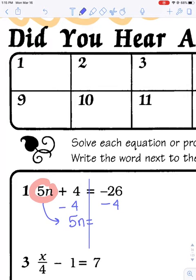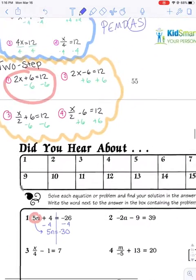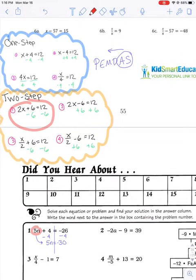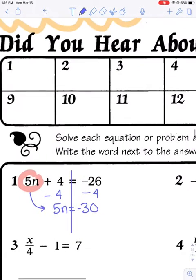The plus 4 goes away. What I'm left with is the 5n and I'm going to drop that down. 5n equals. On the right side, I have same sign. So I'm going to add to get 30. Keep the same sign to make it negative. So 5n equals negative 30. Now this is a one-step equation. So if we look at our one-step equations in the blue cloud, this is like one-step equation number 3. So I need to divide both sides by 5 in order to find what n is. Divide both sides by 5 and I get n equals negative 6.